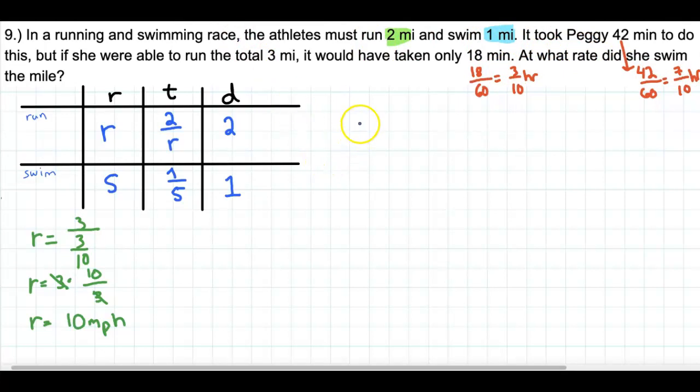So we have the 2 over R, plus 1 over S, is equal to 7 tenths. Okay. That's good.